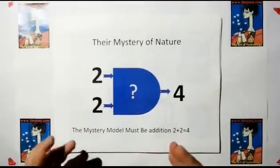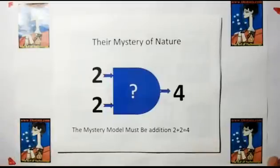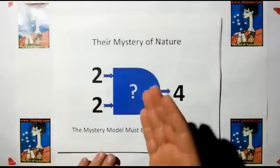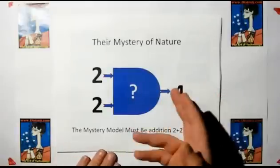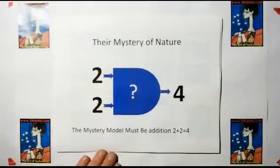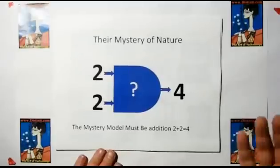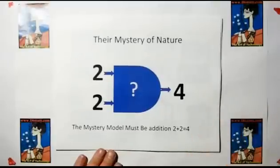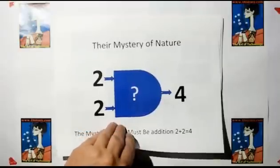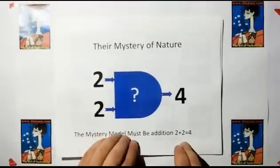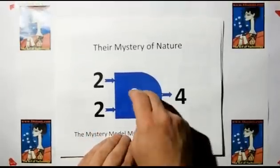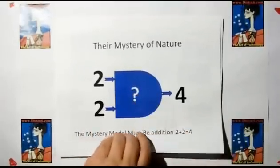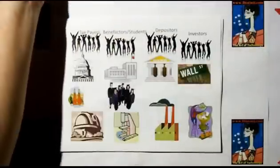Let's say they're a new species; they don't really know much about the universe or nature. So they have to figure out: why do we get four out when we put two and two in? And obviously, because they're new at this and counting chickens is the first thing they learned, they say it must be addition. Addition must be the mystery of the secret box — the mystery of nature that they're looking for.